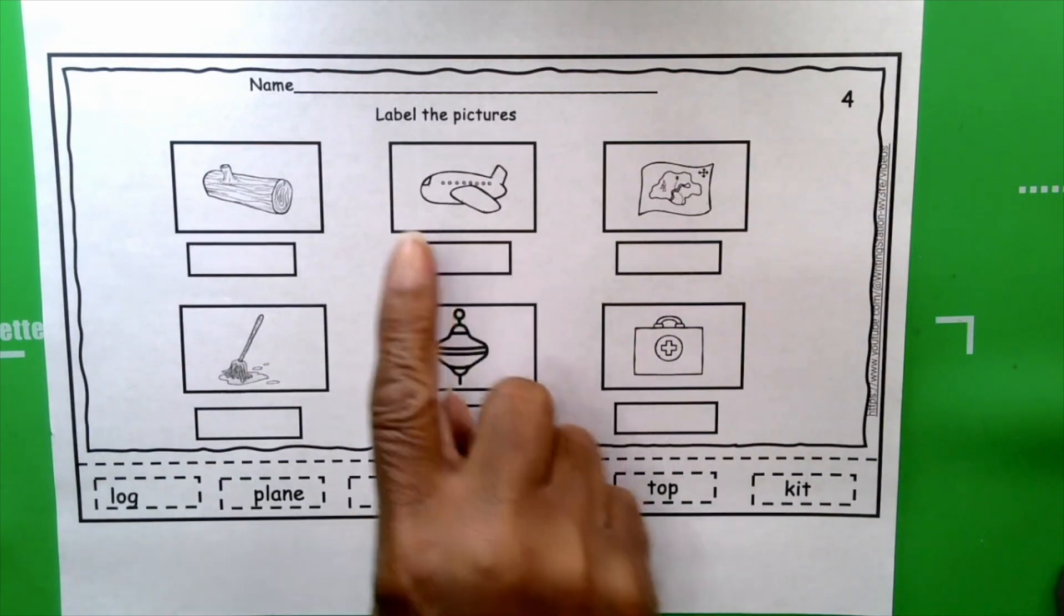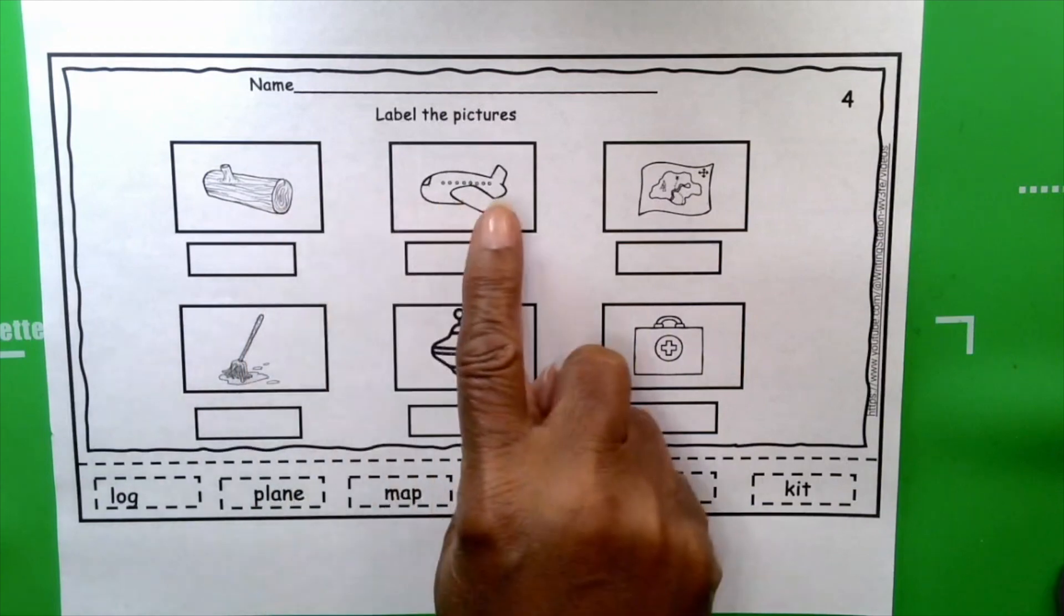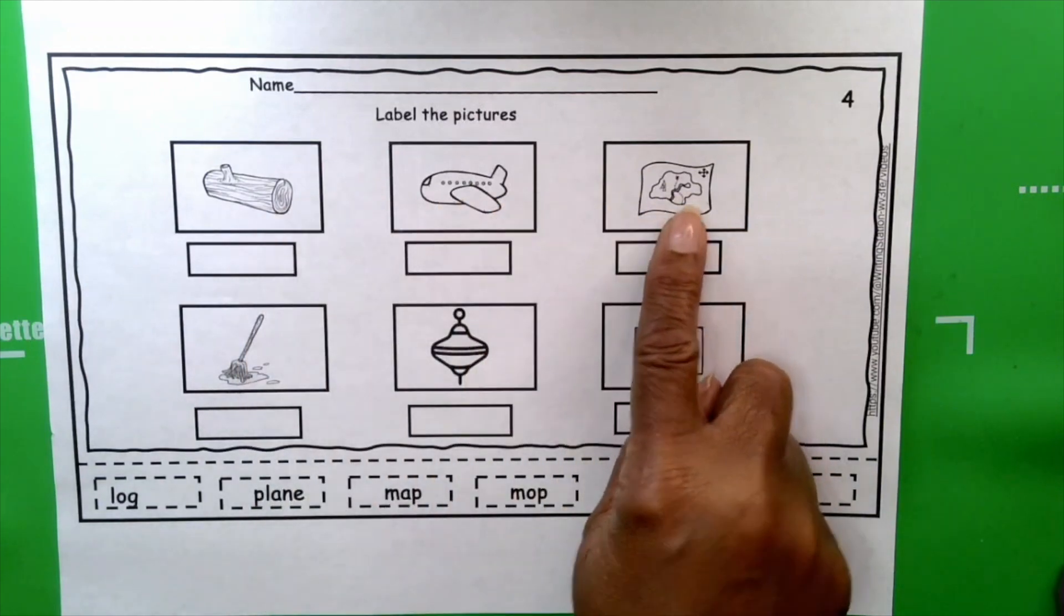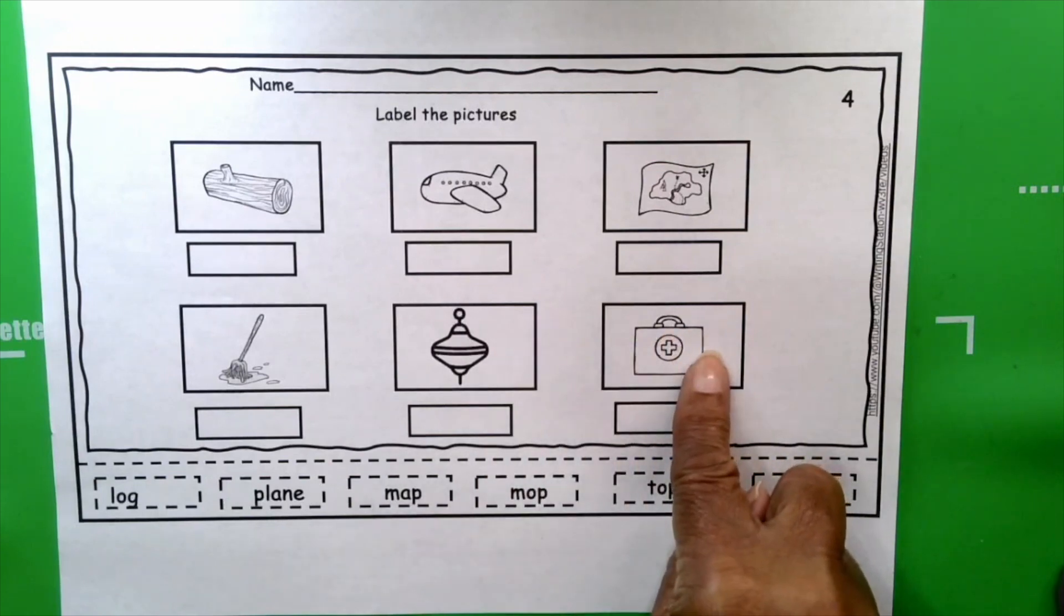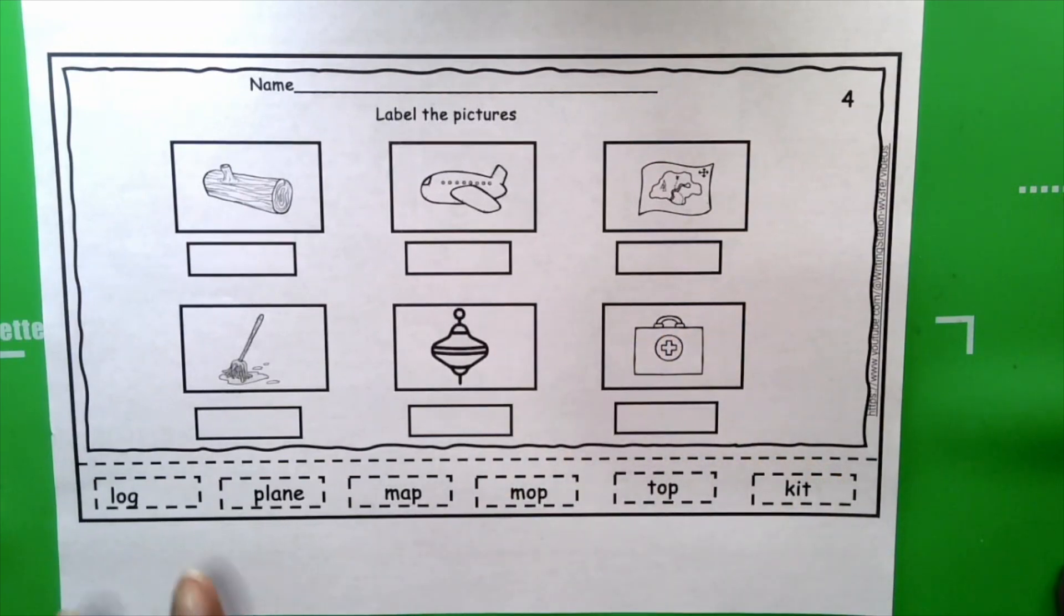Let's say the pictures: log, plane, map, mop, top, kit. And let's say the words: log, plane, map, mop, top, kit.